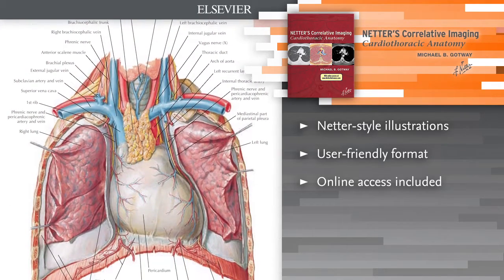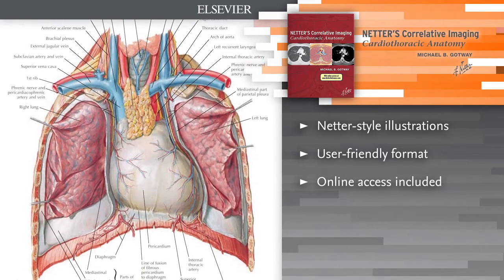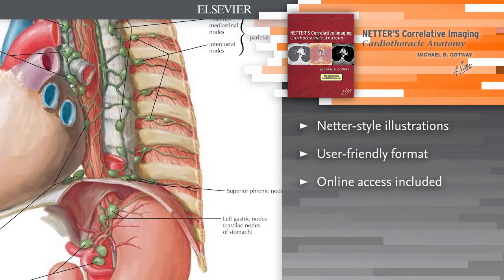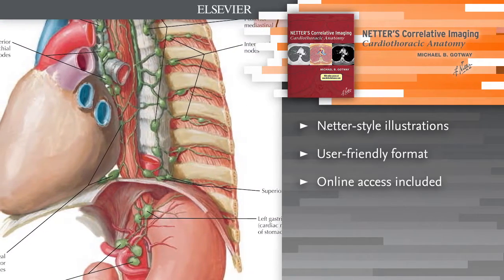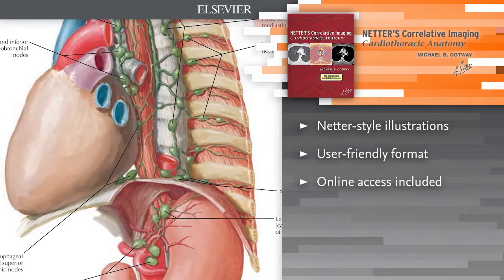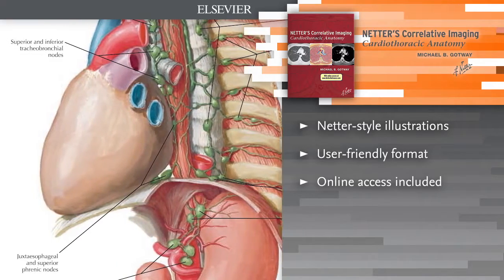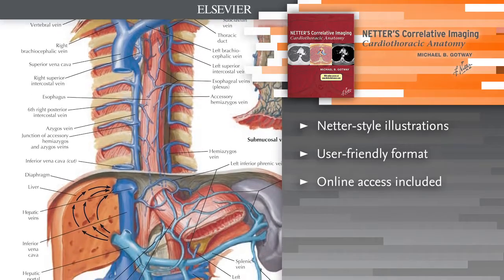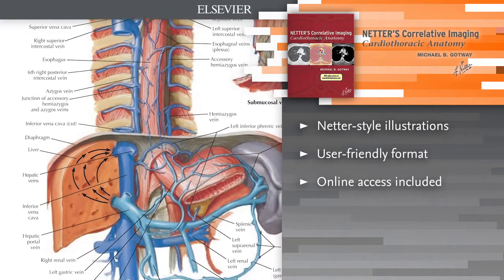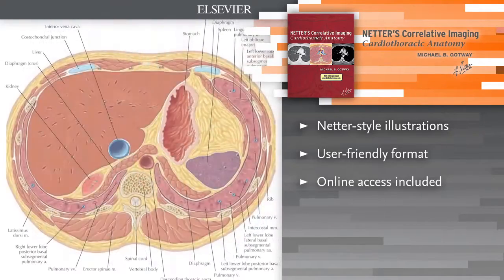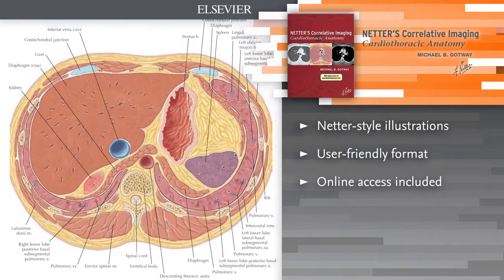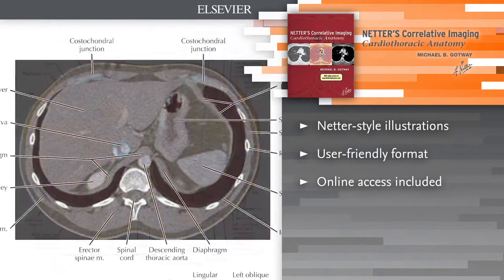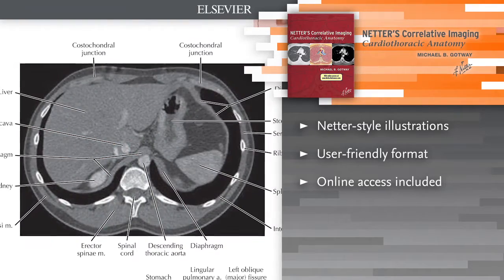View thoracic, chest wall, lung, and heart anatomy in breath hold cardiac MR, multi-slice thoracic CT, and CT coronary angiography. Each image is complemented by a detailed illustration in the instructional and aesthetic Netter style. Find anatomical landmarks quickly and easily through comprehensive labeling and concise text highlighting key points related to the illustration and image pairings.